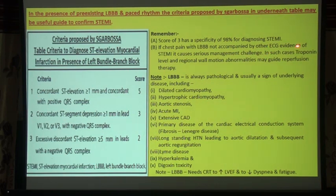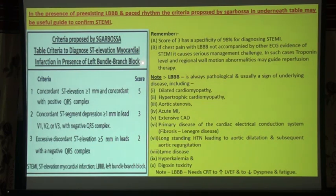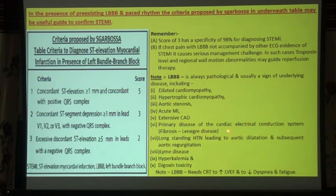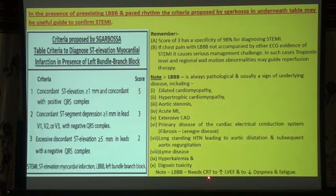In chest pain with left bundle branch block not accompanied by other ECG evidence of STEMI, it causes serious management challenges. Troponin levels and regional wall motion abnormalities may guide reperfusion therapy. LBB is pathological and is usually a sign of underlying disease such as diabetic cardiomyopathy, hypertrophic cardiomyopathy, aortic stenosis, primary disease of the cardiac electrical conduction system, fibrosis (Lenegre's disease), long-standing hypertension, and digoxin toxicity. In such cases, LBB needs CRT to increase left ventricular ejection fraction and decrease dyspnea and fatigue.